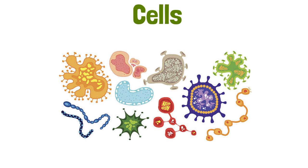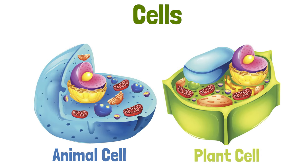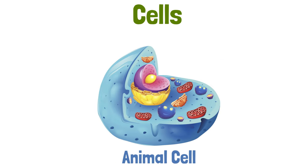All living things are made of cells. Most cells are so tiny that you cannot see them without a microscope. In this lesson, I'm going to show you the different parts or organelles of both animal and plant cells. Let's start with the animal cell.